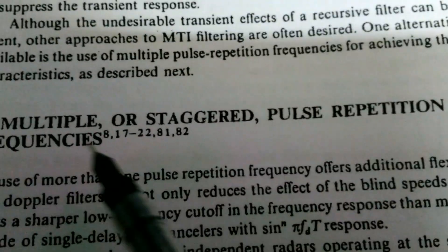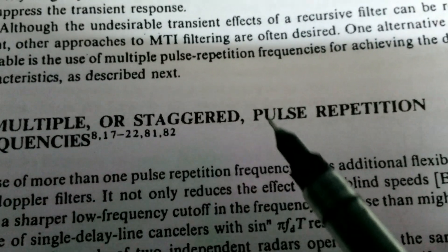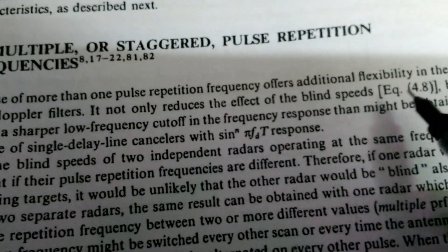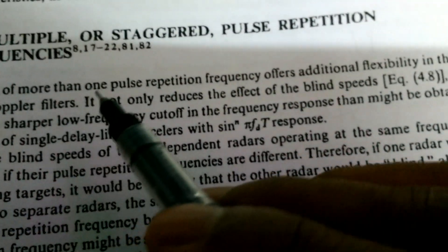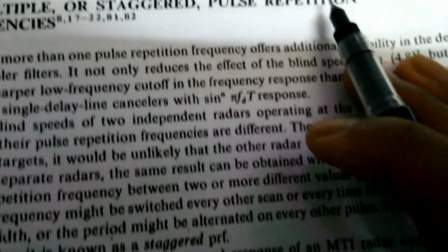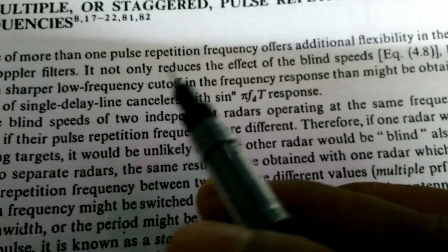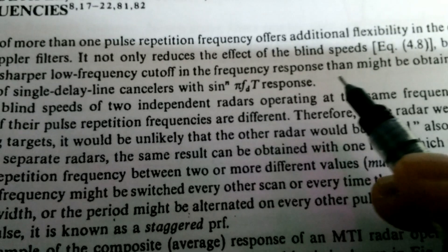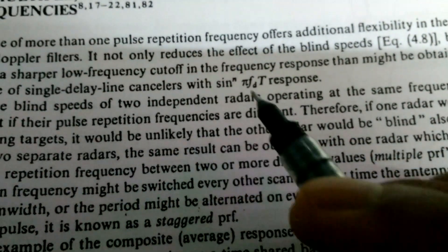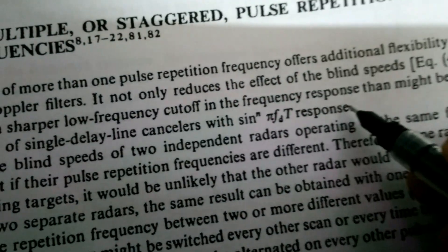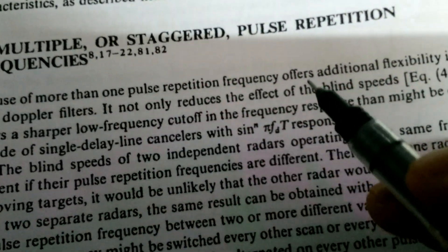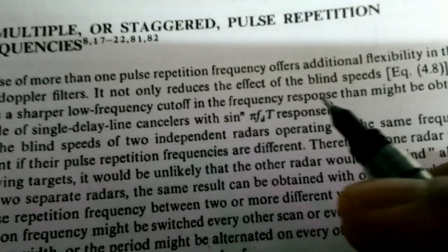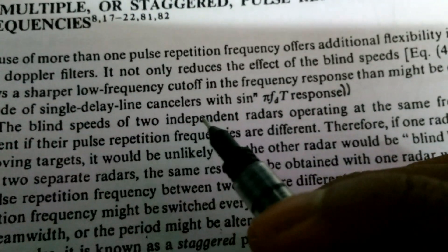The next topic is multiple or staggered PRFs — multiple or staggered pulse repetition frequencies. The use of more than one pulse repetition frequency offers additional flexibility in designing MTI Doppler filters. Using multiple PRFs provides better frequency stability and flexibility because it not only reduces the effect of blind speed but also allows a sharper lower-frequency cutoff in the frequency response than a cascade of single delay line cancellers.